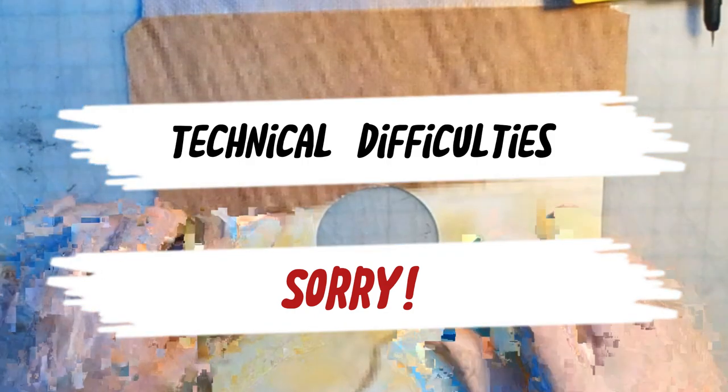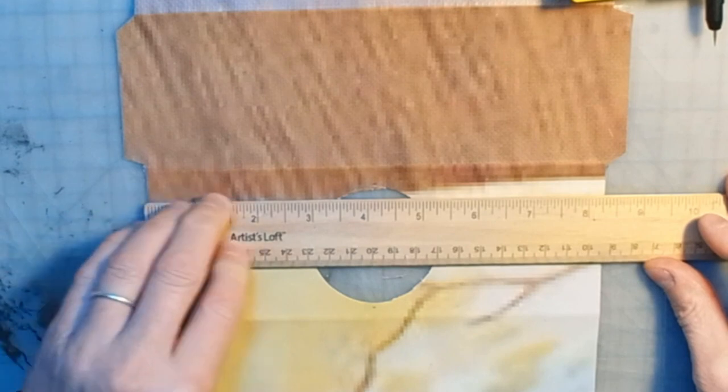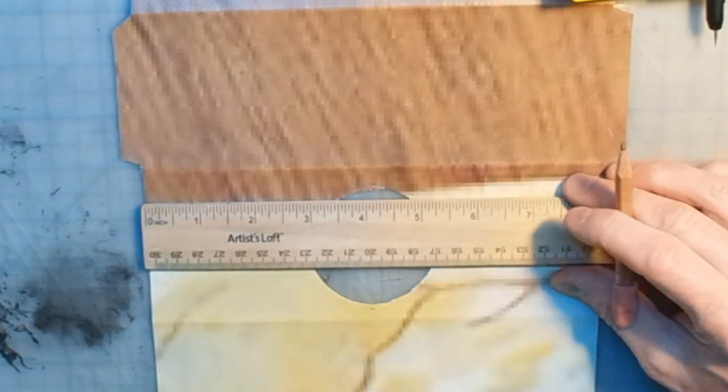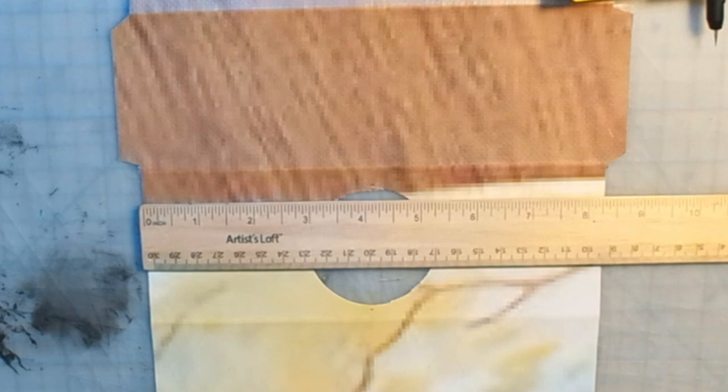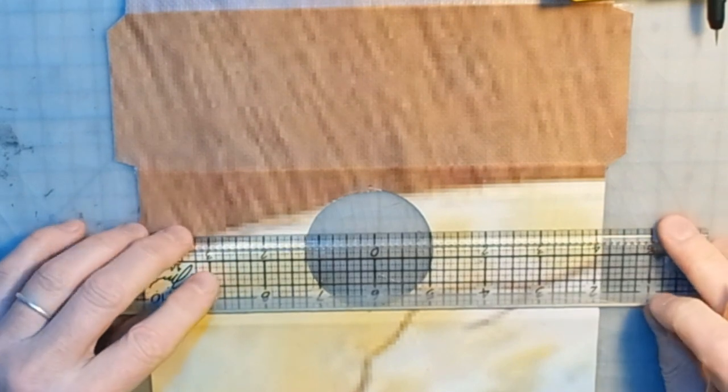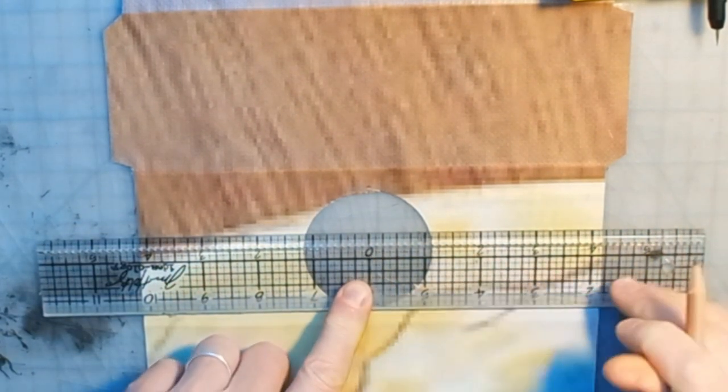And then I'm also going to make marks for this card to slide in. So let's see. That's eight and a quarter. And actually, I can cheat here. I have a centering ruler. Great thing. I highly recommend. So this is a ruler that also has a zero in the middle. Makes this kind of thing a lot simpler.